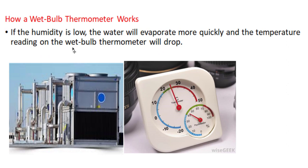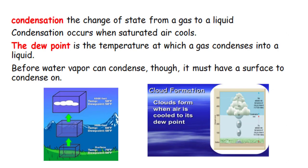How the wet bulb thermometer works: if the humidity is low, the water will evaporate more quickly and the temperature reading on the wet bulb thermometer will drop. Condensation occurs when saturated air cools. The dew point is the temperature at which a gas condenses into liquid. Before water vapor can condense, it must have a surface to condense on — for example, in the morning when you touch a plant, it is wet because of the dew point.